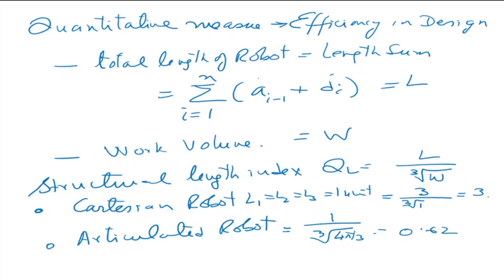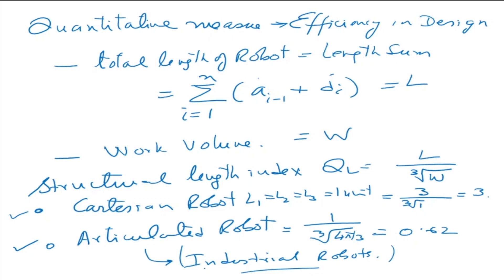In terms of design, the Cartesian robot can carry a lot of weight, but the structural length index shows it is less design-efficient. The articulated robot has a larger work volume relative to its length. This is why most industrial robots are articulated—they don't need to carry very heavy loads but must go into difficult places and have a larger work volume.